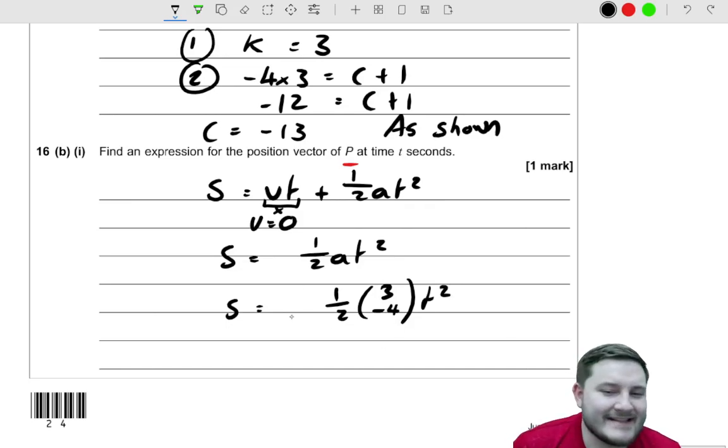Now, this isn't actually finished. A lot of students will just say, right, done. And it was great, spotting that U is equal to zero. However, there's something massively missing here.